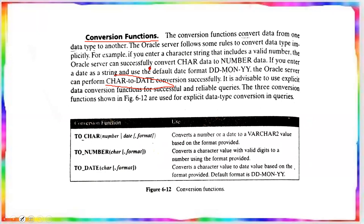Using explicit data conversion functions, we can control these conversions. TO_CHAR converts a number or date to a character value based on a specified format. TO_NUMBER converts a character value to a number given a format. TO_DATE converts a character value to a date, with the default format being DD-MON-YYYY.